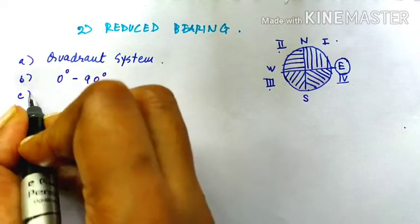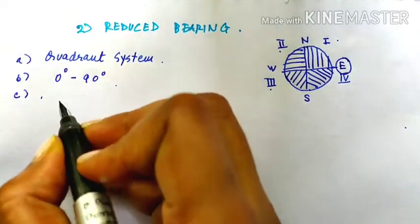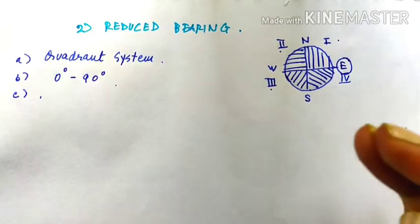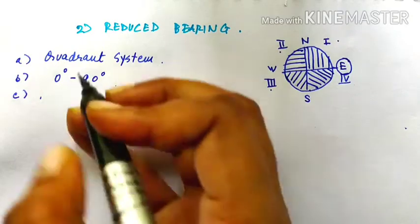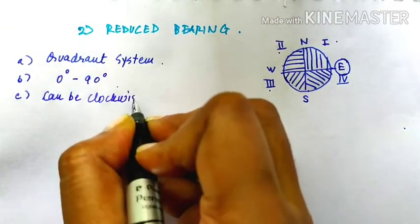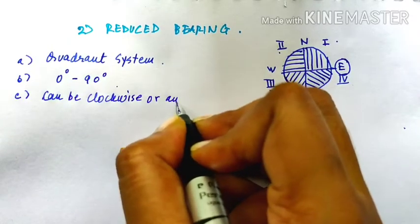The third characteristic is the movement. Earlier, it was clockwise. Here, the movement can be clockwise or anticlockwise.